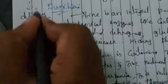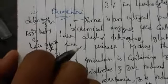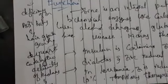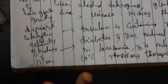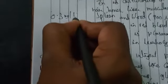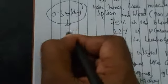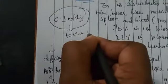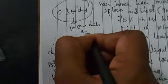Zinc deficiency reduces kidney and liver activity. The required daily intake of zinc in our diet is 0.3 milligrams per day. This summarizes the functions of zinc.